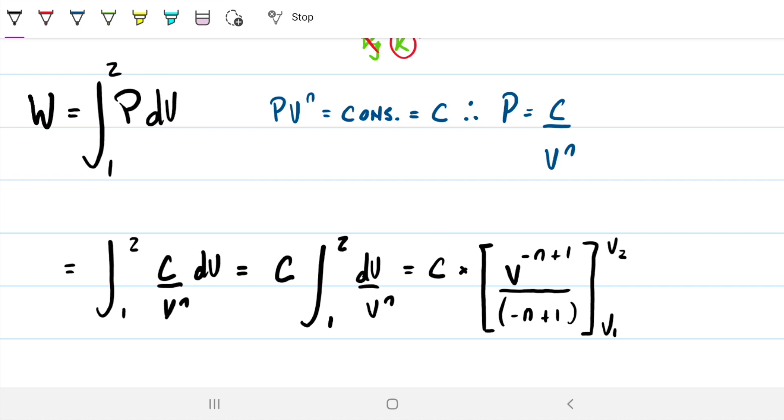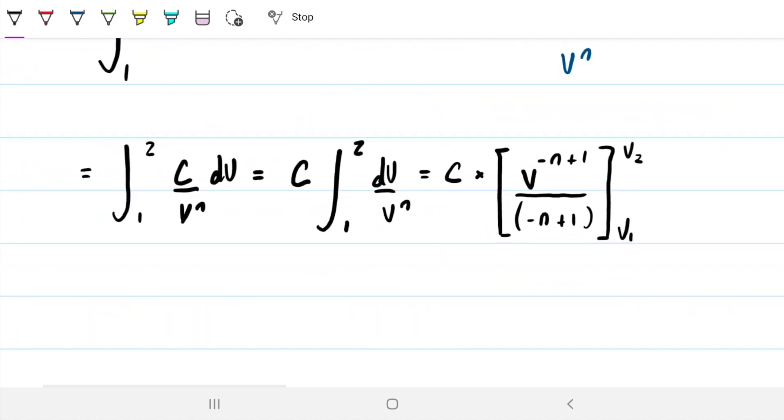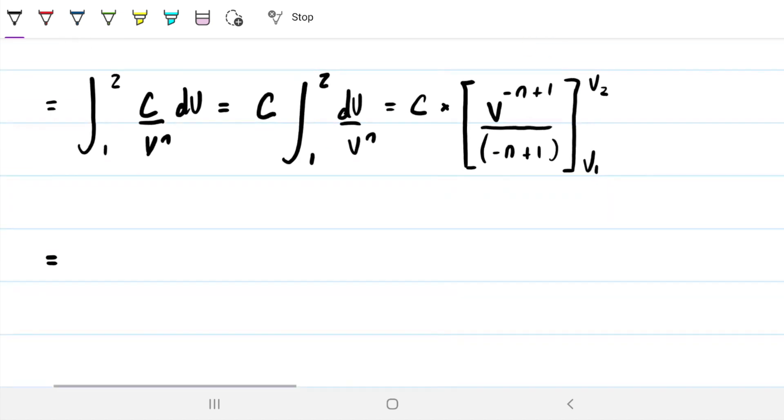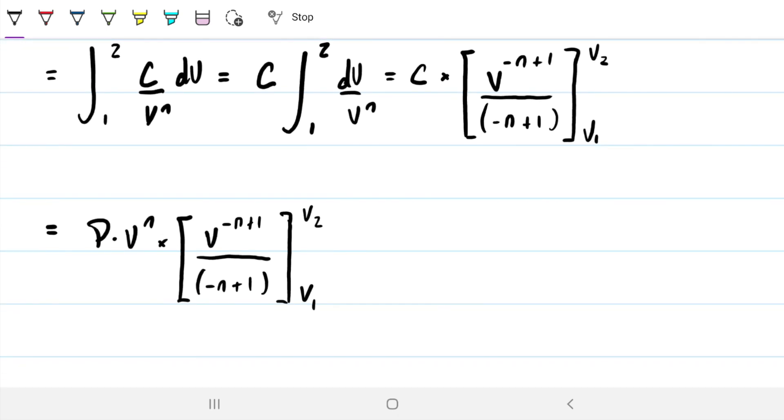At this point, we can substitute back in the constant where we have C. We can set back in PVⁿ and use the values that we know, or we can keep going to get the general formula. Up to you, whatever you're more comfortable with. We're going to write it so C is PVⁿ, and we're multiplying that by V^(-n+1) divided by (-n+1), as we go from V₁ to V₂. We have everything we need, so we might as well just plug in information.